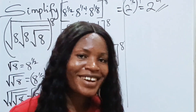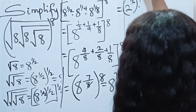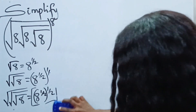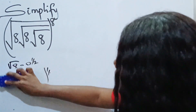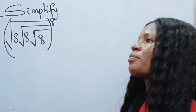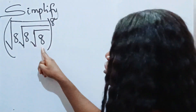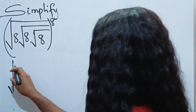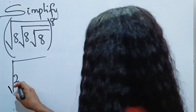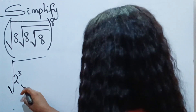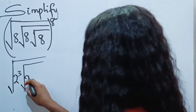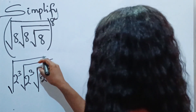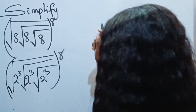Now let's go ahead and use the second method. For the second method, I'm going to change everything to base 2. So we will have this as the square root of 2 to the power of 3, multiplied by the square root of 2 to the power of 3, multiplied by the square root of 2 to the power of 3, with everything raised to the power of 8. I told you this is the interesting one.